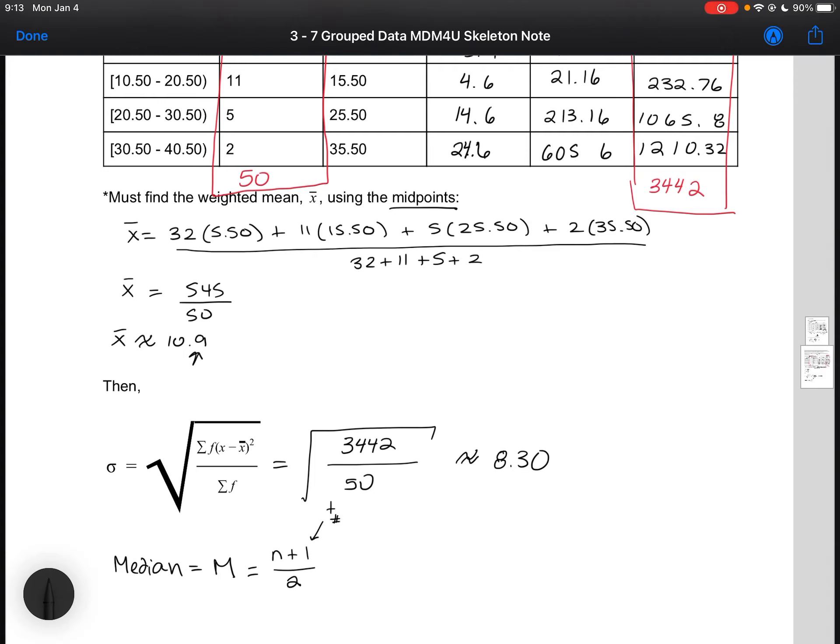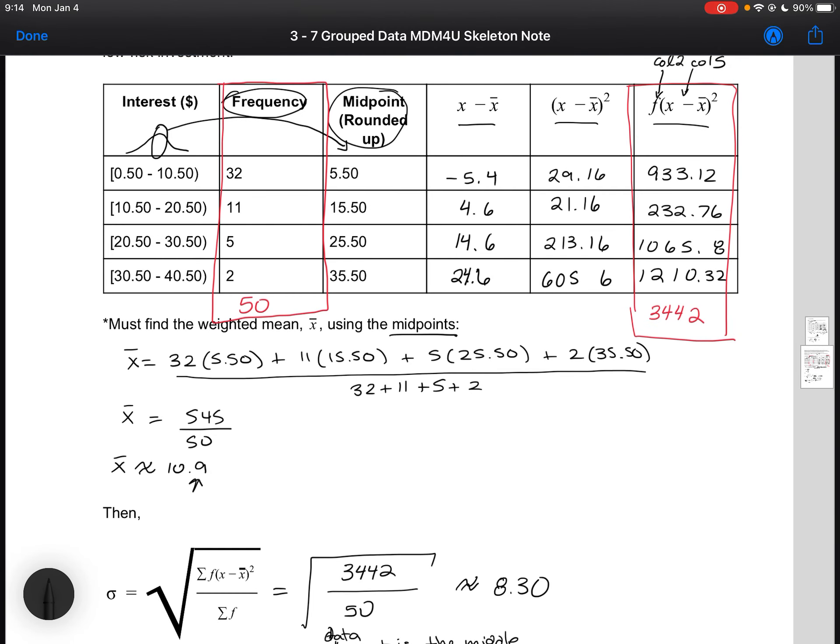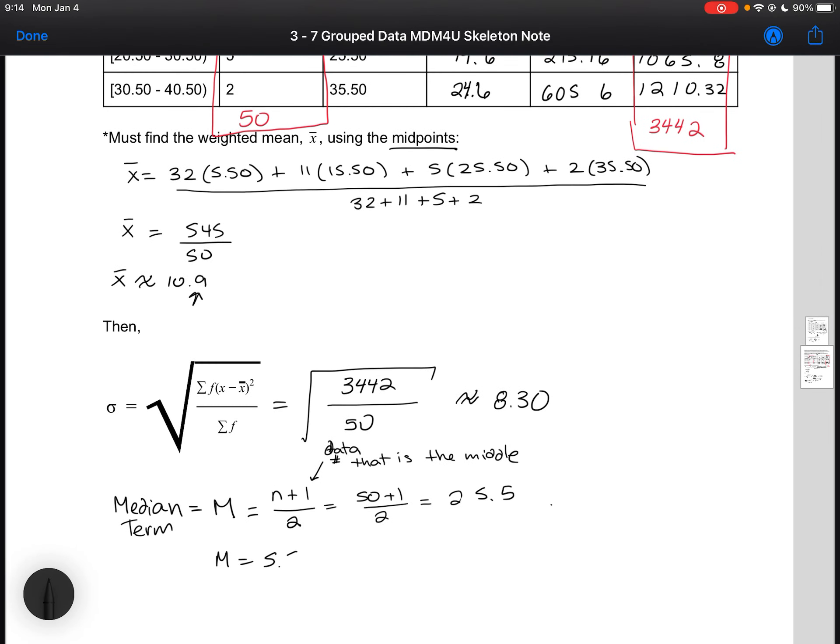So let's call it the data number that is the middle. And so here we've got 50 data points plus 1 divided by 2. So let's call this the median term. So this is going to give us 25.5. So what that means is that our 25.5th piece of data is going to be our median. So if I go back up to my chart and I'm going to look at my frequencies. I see that in my first row I've got 32 pieces of data in that row. So that means my 25.5th piece is going to be in that first column. So I can make the conclusion that the median is 5.50.